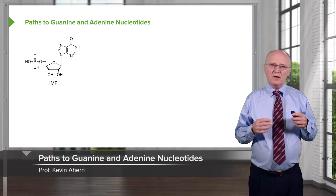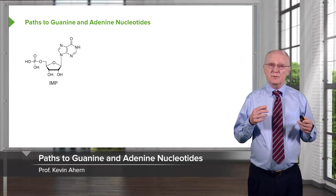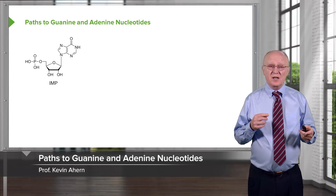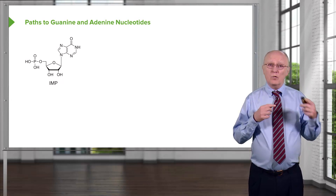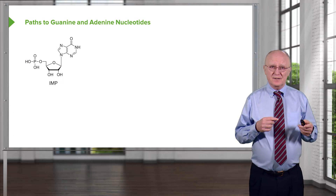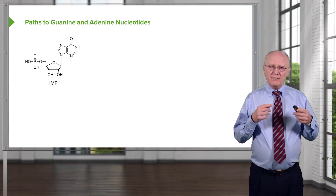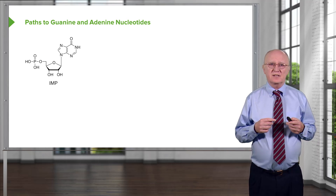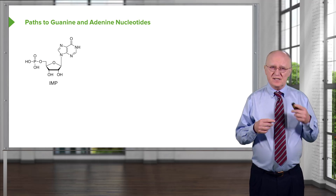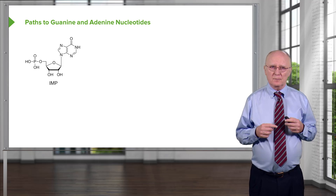IMP, you recall, is the molecule that was the branch point between the synthesis of the adenosine nucleotides and the guanosine nucleotides. We're going to follow those reactions to make both of those sets of nucleotides in some detail here.